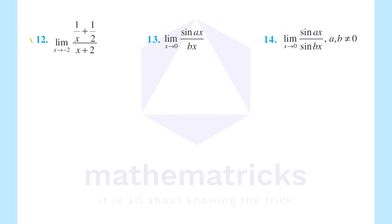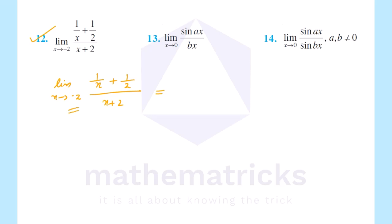Next: limit x tends to minus 2, 1 by x plus 1 by 2 divided by x plus 2. Substituting x = minus 2: 1 by minus 2 plus 1 by 2, which gives minus 1 by 2 plus 1 by 2, equal to 0. And x plus 2 equals minus 2 plus 2 equals 0. So we have 0 by 0 form.